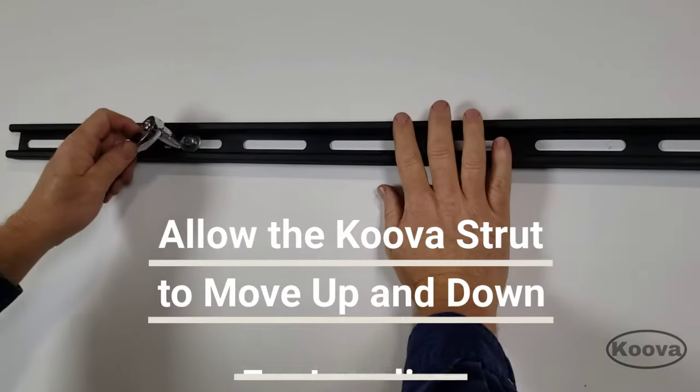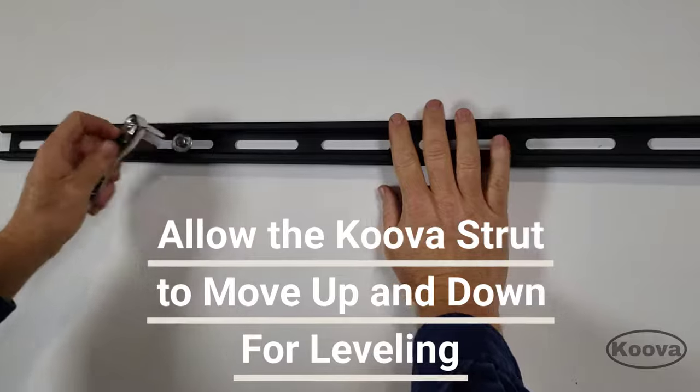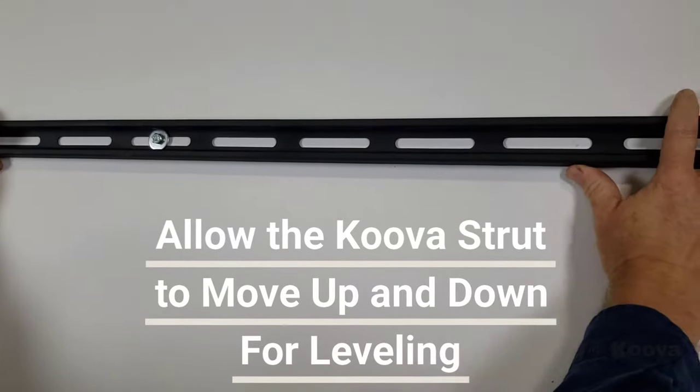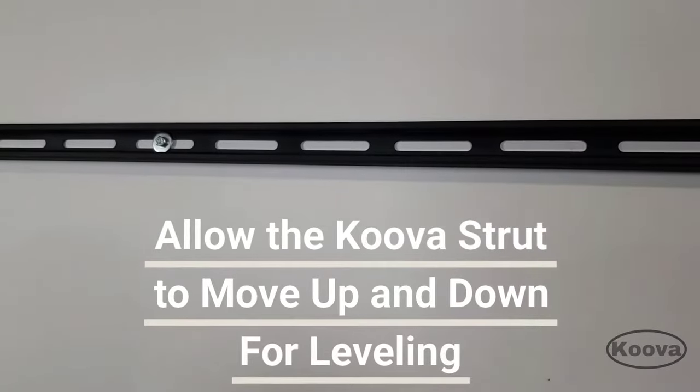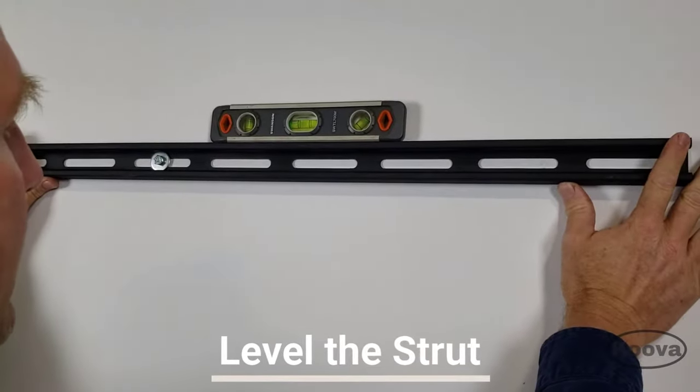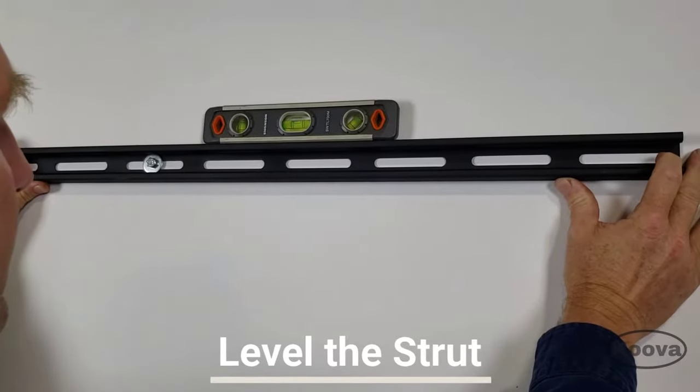Once you've installed the first lag bolt, just tighten it enough to where you can still move the bracket, but it'll stay on its own. Put a level on top, and then just make a slight adjustment as needed to get it level.